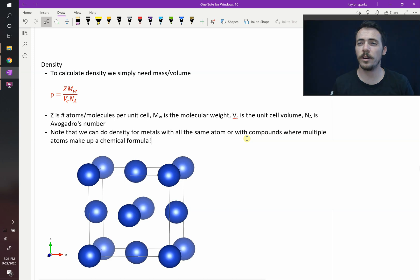Alright, we need to teach you how to calculate theoretical density for any arbitrary crystal structure. You know the formula for density. It's mass divided by volume. We're going to do a slight variation on that. It's still mass divided by volume, but we're going to think about it in terms of atoms. So the formula is ρ equals Z times MW divided by VC times NA.